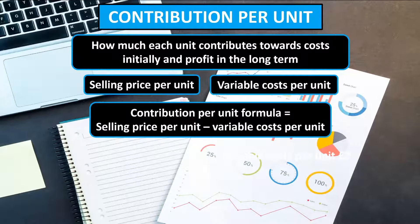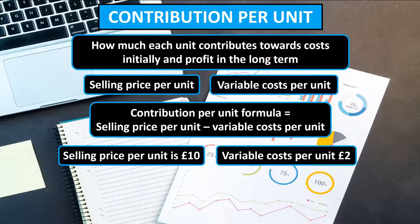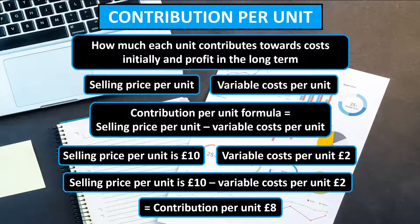Once you have identified these two figures, you can use the contribution per unit formula — selling price per unit less the variable cost per unit — to calculate the contribution per unit. For example, if the selling price per unit is £10 and the variable cost per unit is £2, you calculate £10 less £2, giving a contribution per unit of £8.